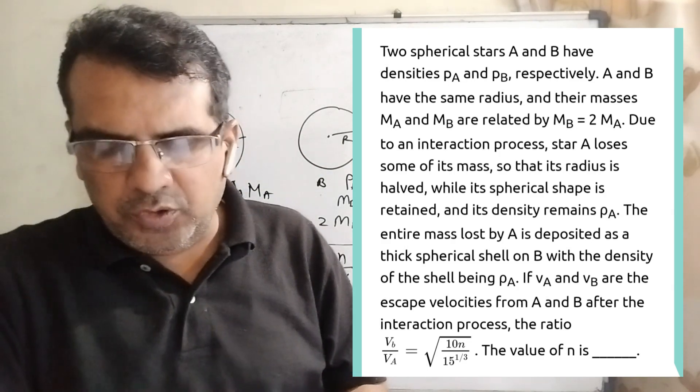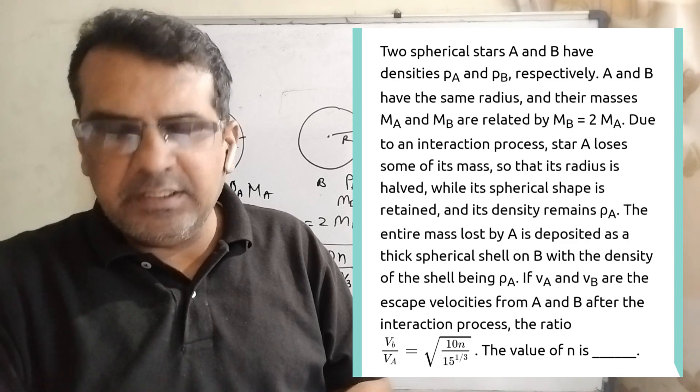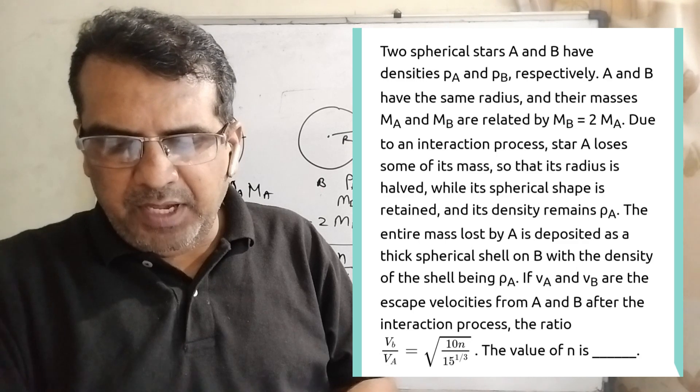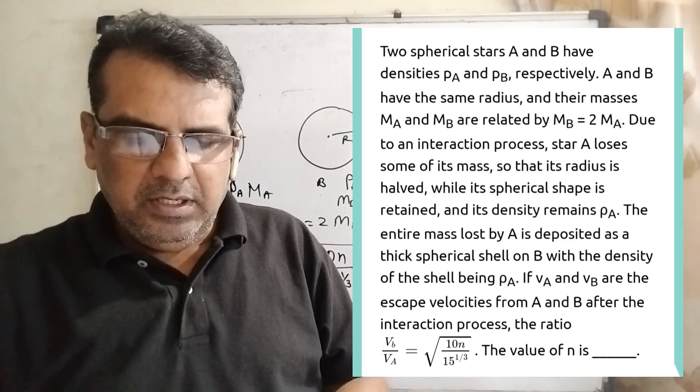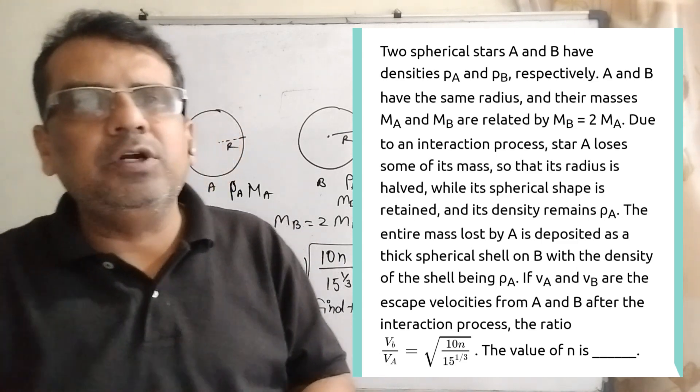Let's move on. What does the question say? Two spherical stars A and B have densities ρA and ρB respectively. A and B have the same radius and their masses Ma and Mb are related: Mb equals twice of Ma.